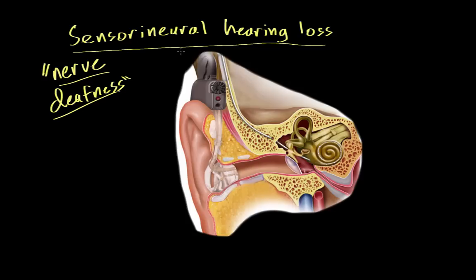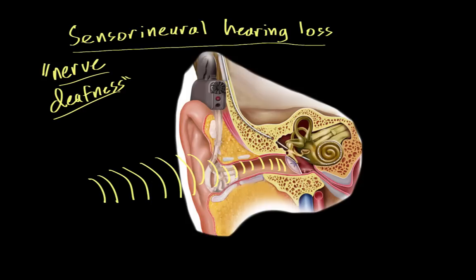Let's talk about sensorineural hearing loss. Normally, sound waves come in, hit the ear, and travel through the auditory canal, causing the eardrum to vibrate back and forth. This vibration causes the three little bones in the middle ear to vibrate, eventually moving fluid back and forth in the cochlea. That fluid movement stimulates hair cells, which then produce an electrical signal that gets sent to the brain.